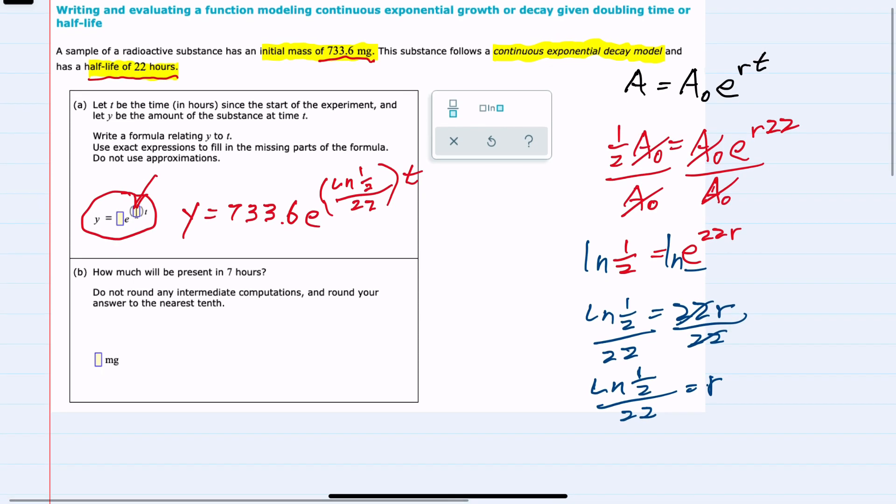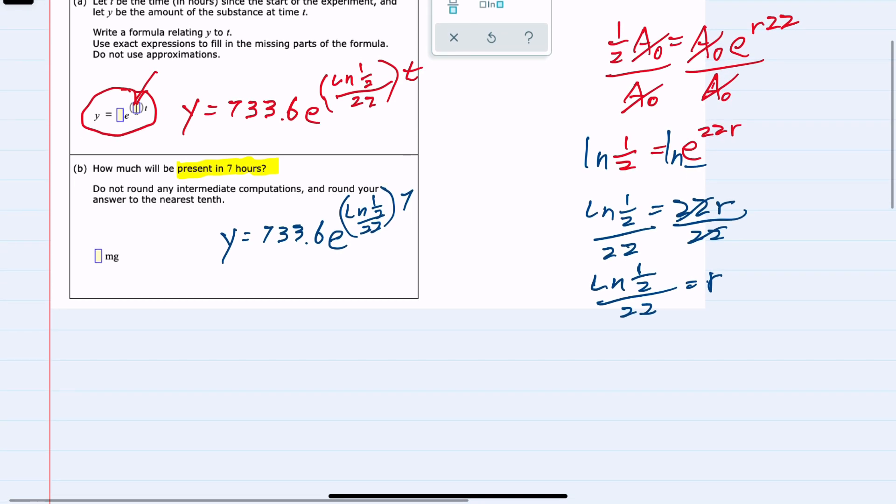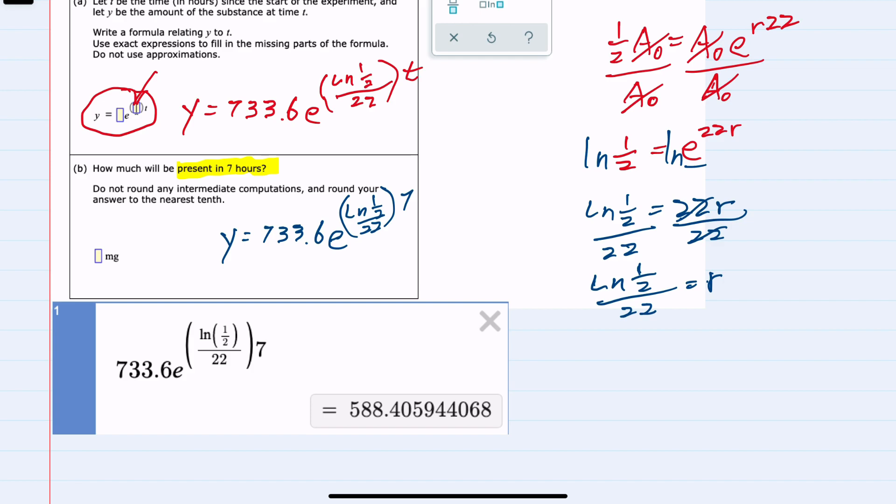From here, we can move on to question b, which asks how much will be present after 7 hours. We're going to substitute 7 hours into that formula, and get y equals 733.6 e to the ln of one-half over 22, times 7. To do this sort of calculation without any intermediate computations, I like to use Desmos. We're told to round to the nearest tenth. Looking at the tenths position, we have 0.4 with a zero behind it, so our amount in part b would be 588.4 milligrams.